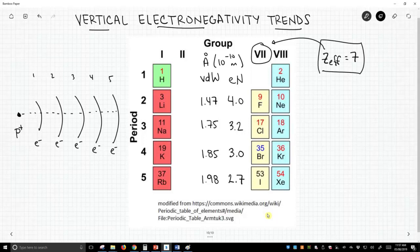So what we see is electronegativity is both affected by the effective nuclear charge, which we know, as well as the distance over which that attraction is exerted. So as we go down the periodic table, the effective nuclear charge is unchanged, but the distance increases, so our electronegativity decreases, and that is the classic vertical trend in the periodic table.